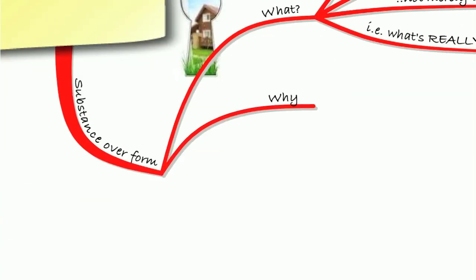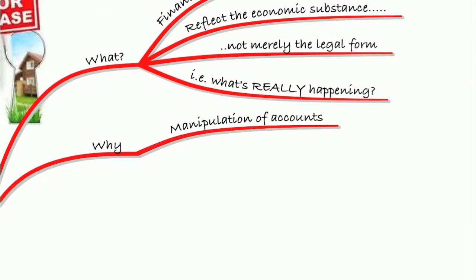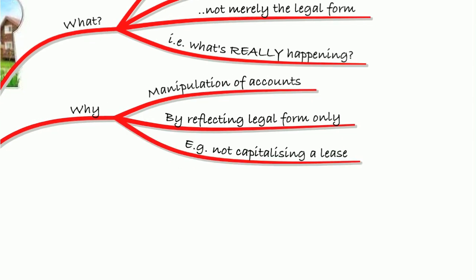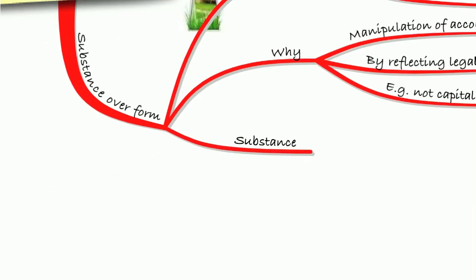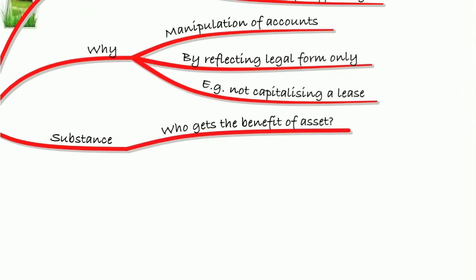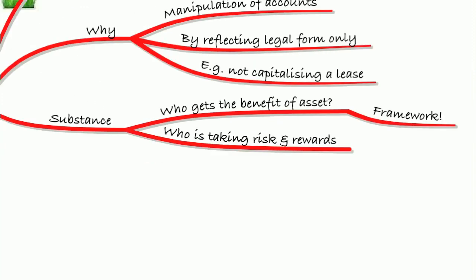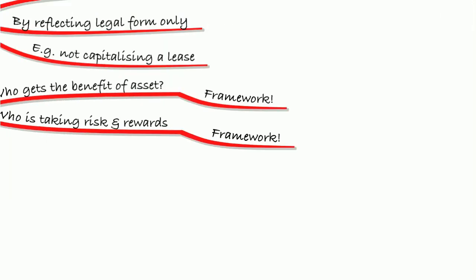Financial statements should reflect the economic substance, not merely the legal form of a transaction — they must show what's really happening. If we have a finance lease that meets the criteria, we must show it as a finance lease, not as an operating lease. This principle exists to avoid manipulation of the accounts. Reflecting only the legal form could allow manipulation — for example, obtaining a legal document stating a lease is an operating lease when the substance is actually a finance lease. We need to reflect the substance: who gets the benefit of the asset and who bears the risks and rewards of ownership should capitalise it.